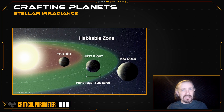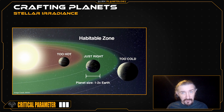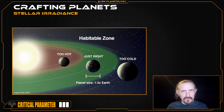I say 'tend' because the specifics of a planet's surface and atmosphere can alter this relationship considerably. That's why Venus is so much hotter than Mercury, even though Mercury is far closer to the Sun.